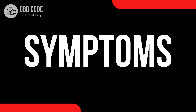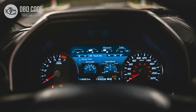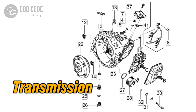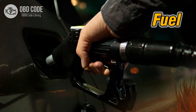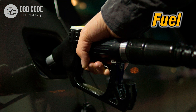Code symptoms P-0773: 1. Check engine light illuminated on the dashboard. 2. Transmission shifting issues, such as harsh or delayed shifting, or failure to shift at all. 3. Vehicle may go into limp mode to prevent further damage. 4. Decreased fuel efficiency due to improper transmission shifting.